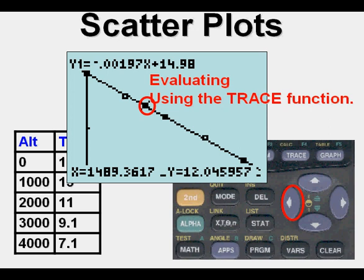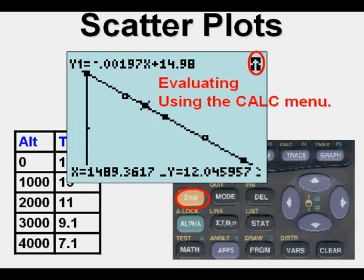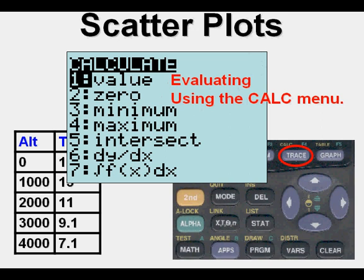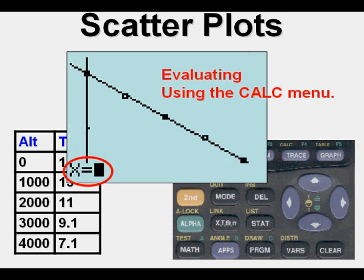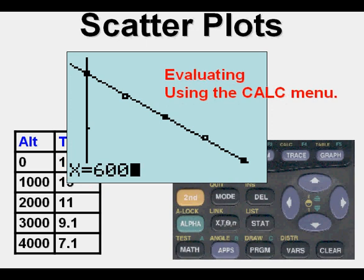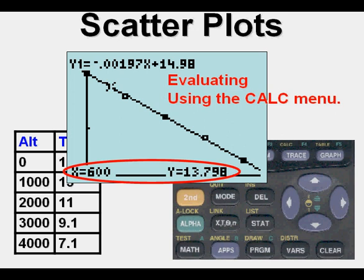We can go ahead and use the CALC menu by pressing 2nd, TRACE, ENTER. Where it says X equals, we can enter whatever we want. At 600 feet, what's our temperature going to be? According to the relation calculated, it's going to be about 13.8 degrees centigrade.